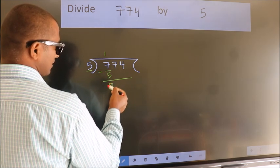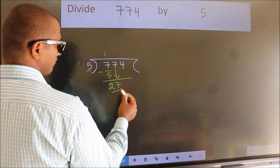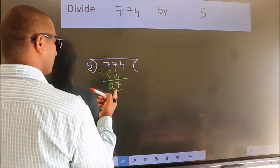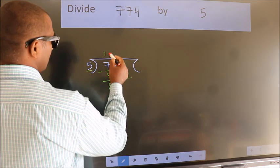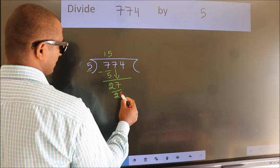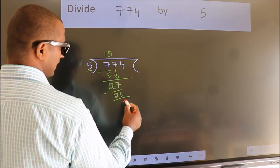After this, bring down the beside number. So 7 down, making 27. A number close to 27 in the 5 table is 5 fives 25. Now we subtract and get 2.